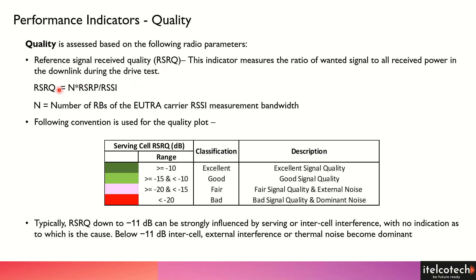The quality is determined by how many resource blocks we are using, and then we consider the received power for the reference signal — which is the wanted or required signal — and divide it by the RSSI, which represents the overall spread of received signals across different channels and signals, irrespective of whether they are coming from the serving cell, a neighboring cell, or external interference.